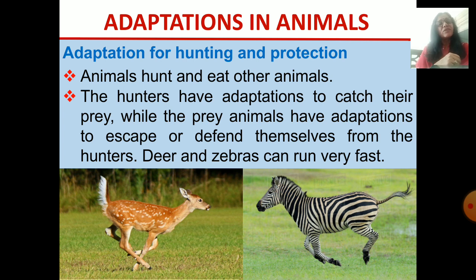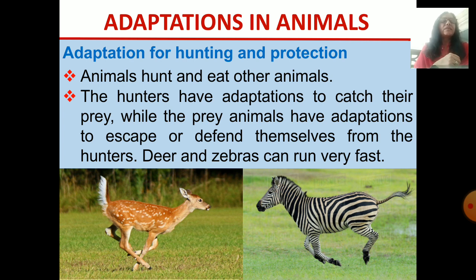Deer and zebras can run very fast. If they see an animal coming to catch them, they can run fast and save themselves, or they can escape from that animal.